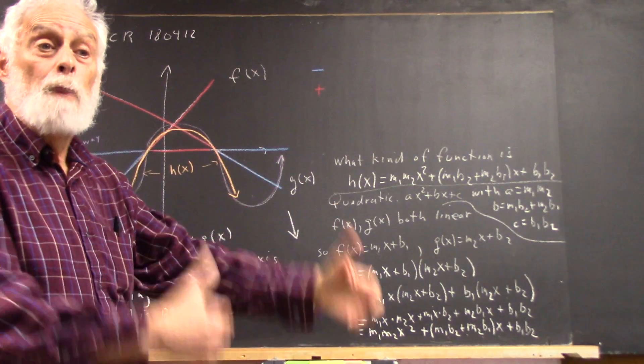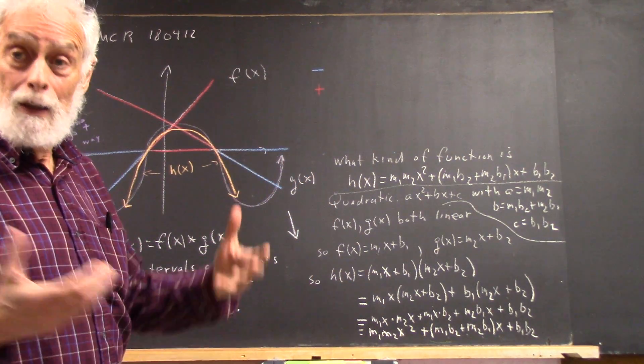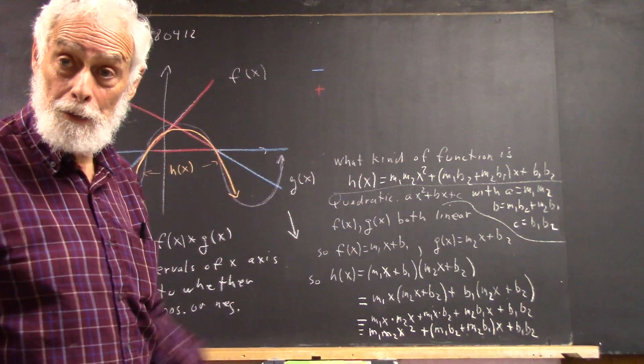And when you multiply two binomials of the form mx plus b, you get a quadratic with an x squared, an x, and a number, right?